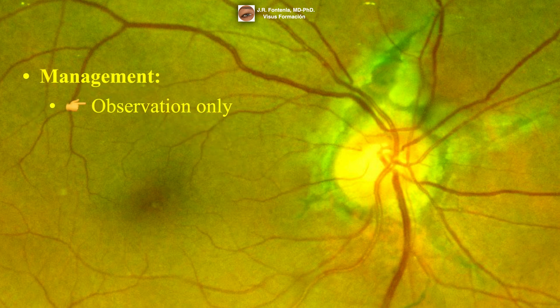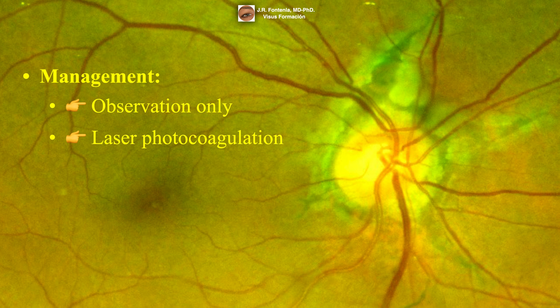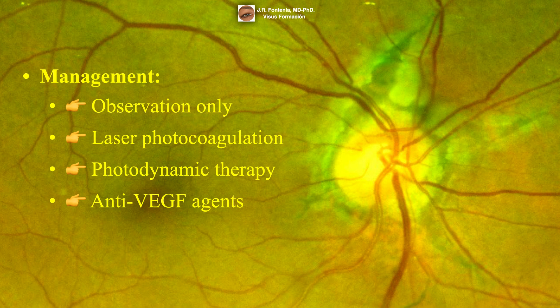Angioid streaks are usually asymptomatic and require observation only. Laser photocoagulation has been used in selected cases of choroidal neovascularization, but the recurrence rate is high. Photodynamic therapy has been used in the past with relatively poor results and frequent recurrences. Treatment with anti-VEGF agents has supplanted laser and photodynamic therapy, and intravitreal anti-VEGF treatment is now the main standard of care with good results.